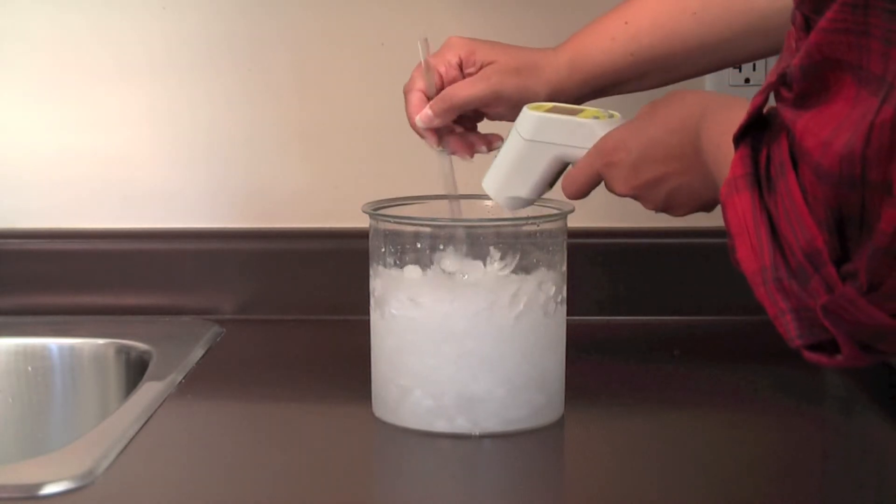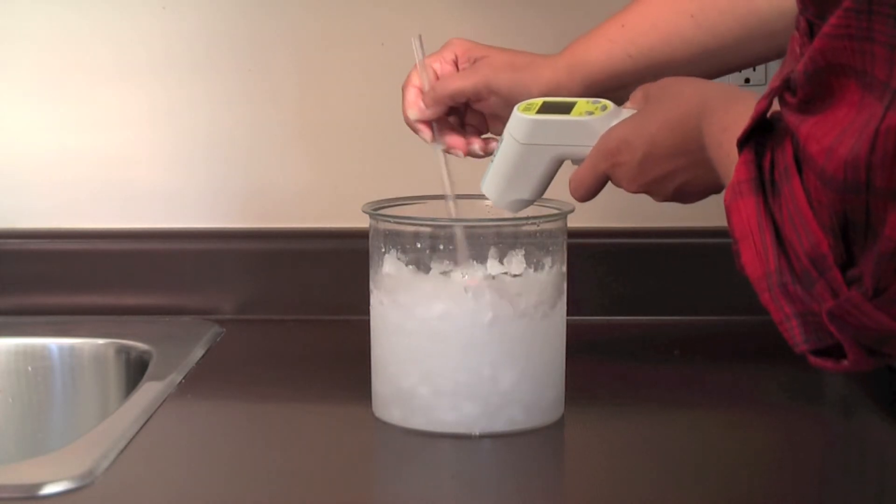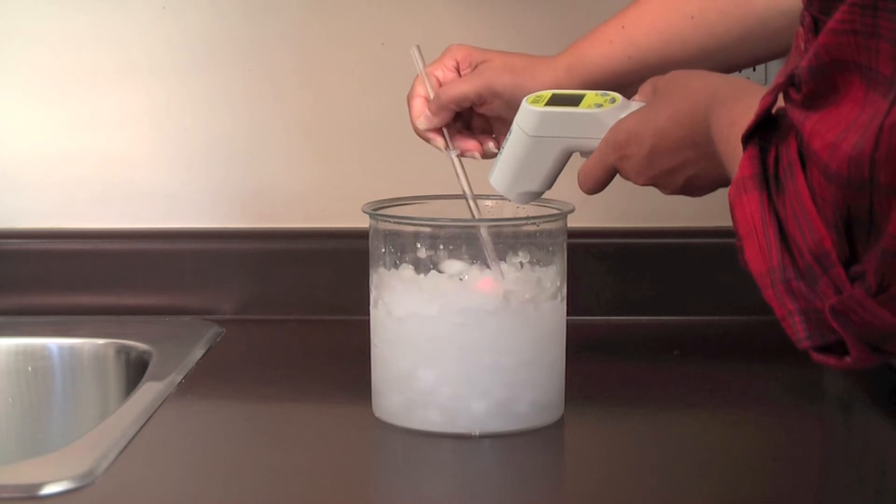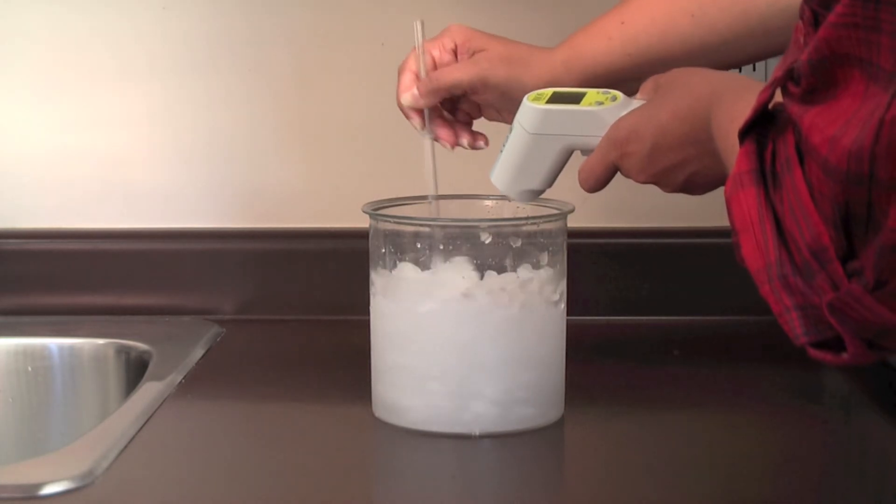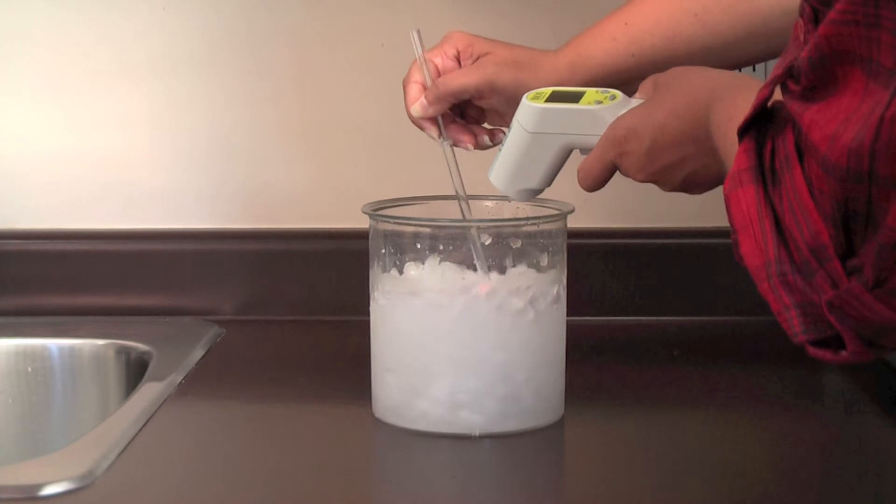Using a plastic straw, start to stir the ice slurry. While doing this, aim the PS200 laser pointer into the ice slurry. The PS200 should be roughly 3 inches away from the surface of the ice slurry for best results.